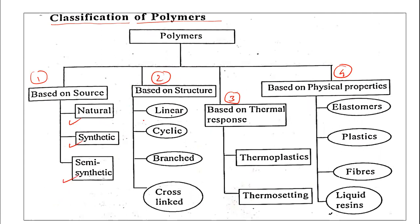Based on source, there are three types: natural polymers, synthetic polymers, and semi-synthetic polymers. Based on structure: linear polymers, cyclic polymers, branched chain polymers, and cross-linked polymers. Based on thermal response: thermoplastics and thermosetting polymers. Based on physical properties: elastomers, plastics, fibers, and liquid resins.